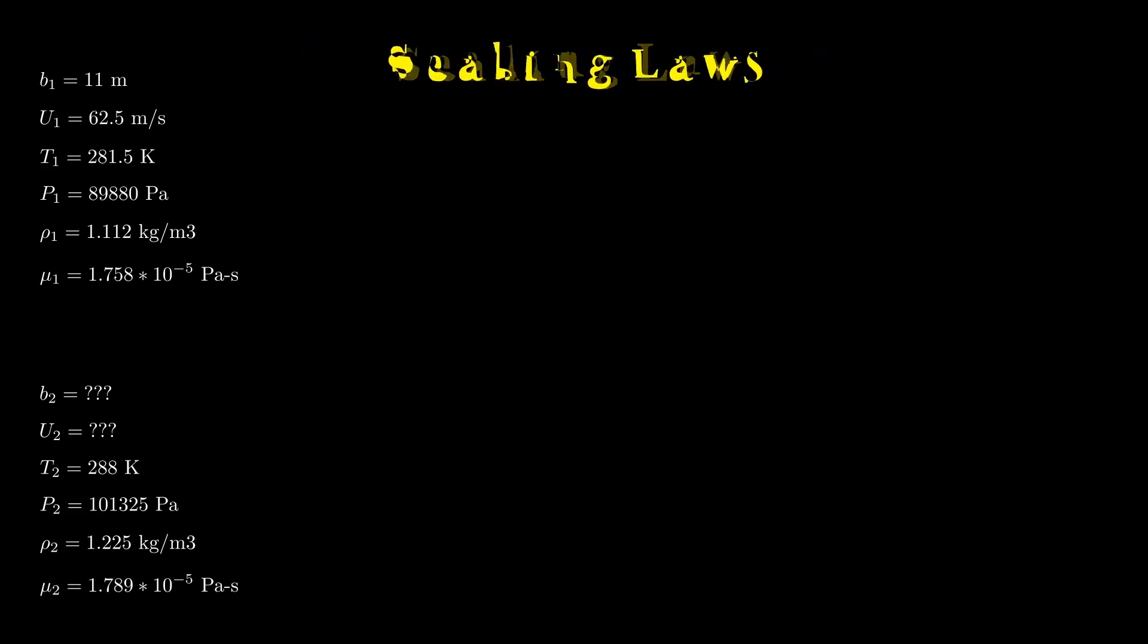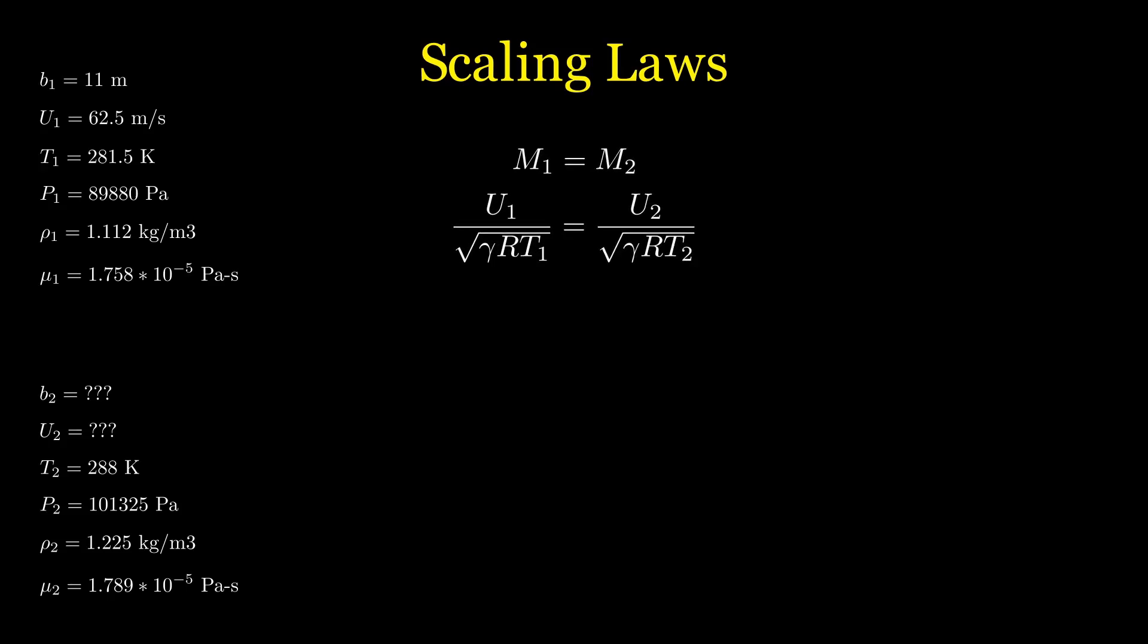We begin with setting the Mach numbers equal, and we will assume that the specific heats are equal, and we are using air in both, so gamma and R can be eliminated, and then solving for U2, we get 63.22 meters per second, is what the wind tunnel speed needs to be.